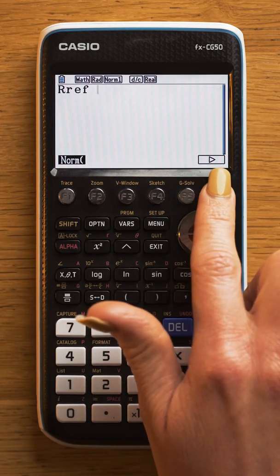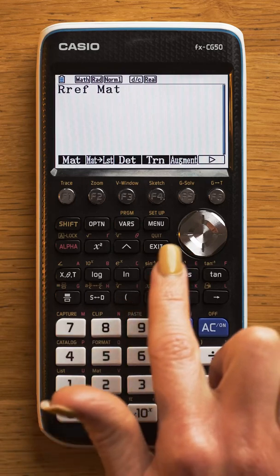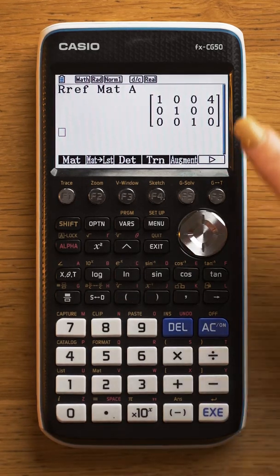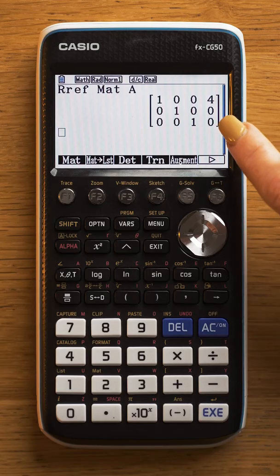RRef of matrix A gives the reduced rational form, which shows the point of intersection is 4, 0, 0.